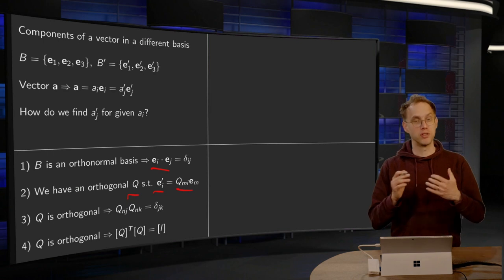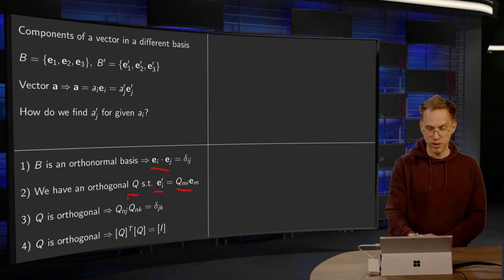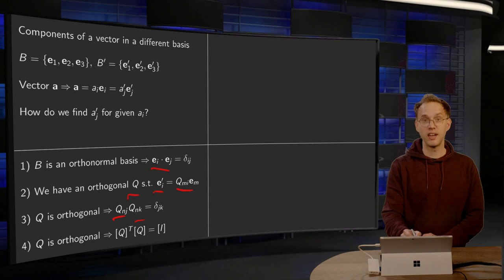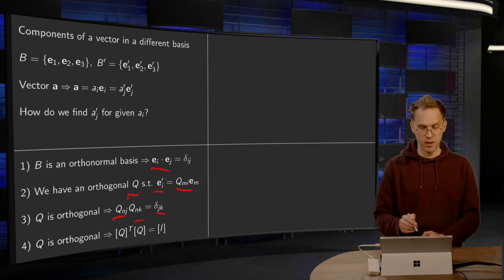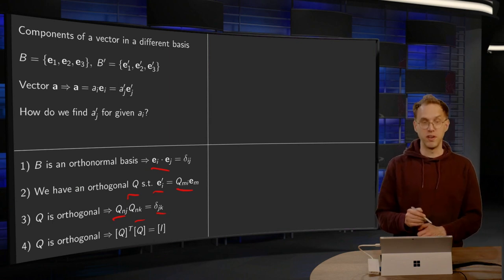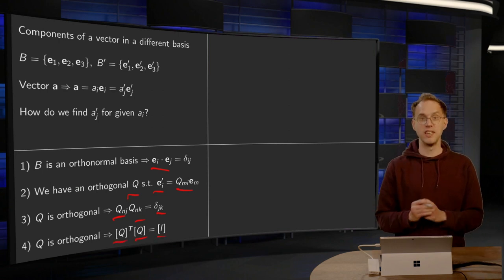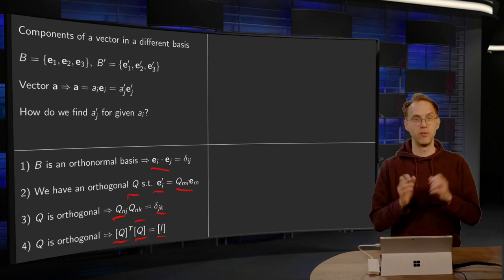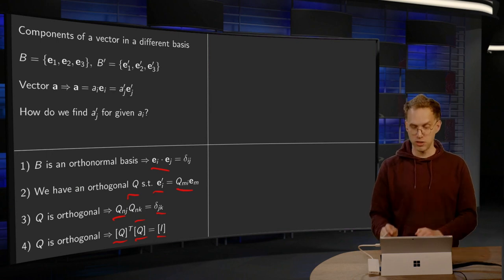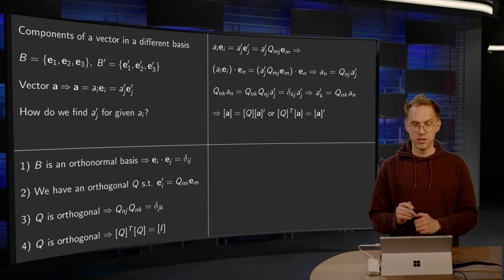Then, two properties, because this Q is orthogonal, we know QnJ, QnK equals delta JK, or an alternative way to express this, the matrix of Q transpose times the matrix of Q is the identity matrix. So, we know these four things, and that will be sufficient.